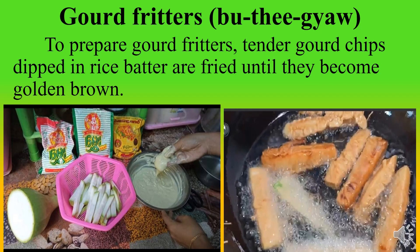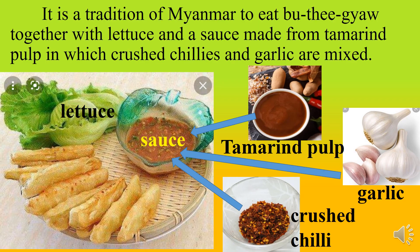To prepare gourd fritters, tender gourd chips are dipped in rice batter and fried until they become golden brown. It is a tradition of Myanmar to eat gourd fritters together with lettuce and a sauce mixed from tamarind, in which crushed chilies and garlic are mixed.